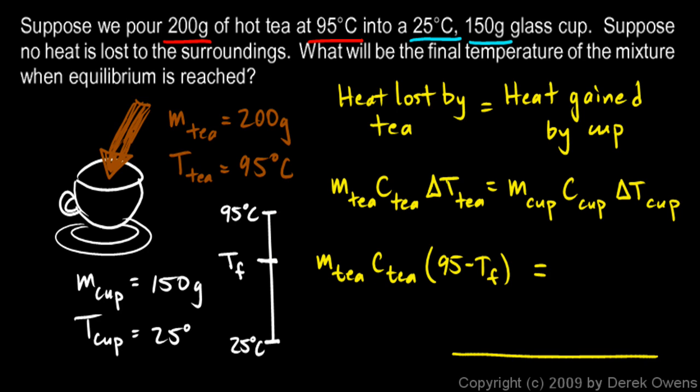You can see that much change in temperature is 95 minus TF. And that's going to equal, I'm going to come down here where I have a little more room. That's going to equal the mass of the cup times the specific heat of the cup times the change in temperature for the cup. And the change in temperature for the cup is the difference between TF and 25. So that's going to be TF minus 25.